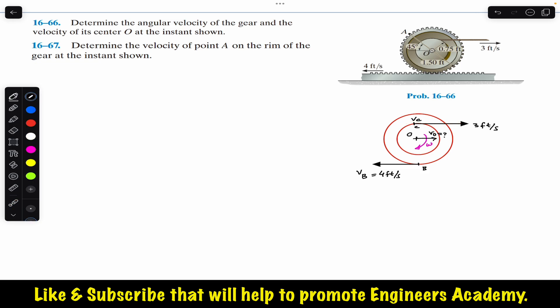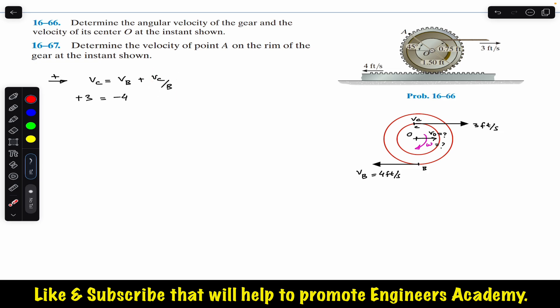We can write that V_C equals velocity of B plus velocity of C relative to B. Towards the right is the positive direction. V_C is towards the right so that is plus 3; V_B is towards the left so that is minus 4. The velocity of C relative to B is due to the angular velocity of the gear. V_C/B will be towards the right since point C is revolving about point B due to omega, with B treated as stationary.